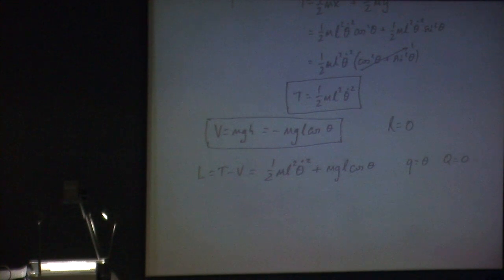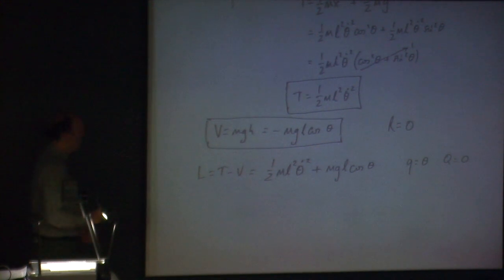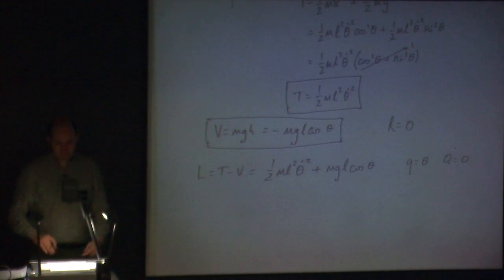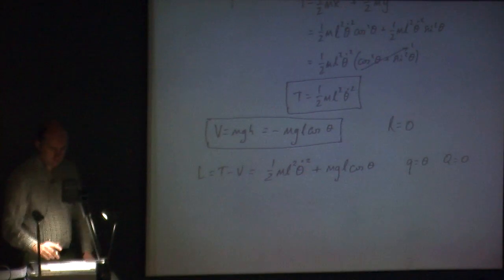R equals 0 — we don't need to worry about R, there are no dampers at all. So L is T minus V, giving ½m l² theta dot squared plus mgl cosine theta. There's only one degree of freedom in this problem and it's defined by theta — the angle of the pendulum.